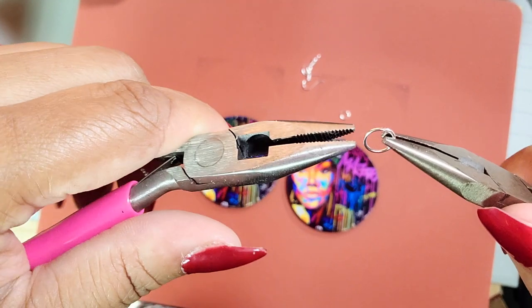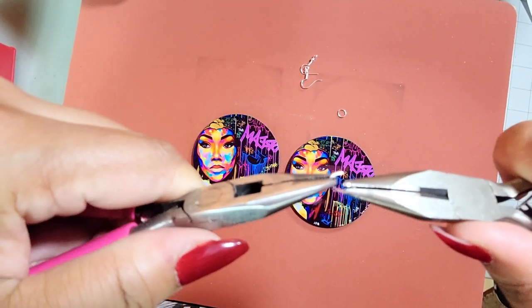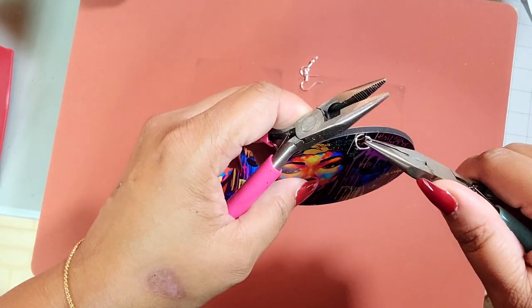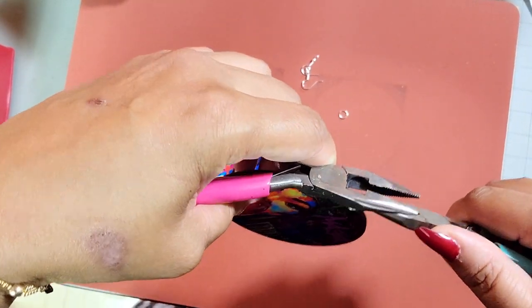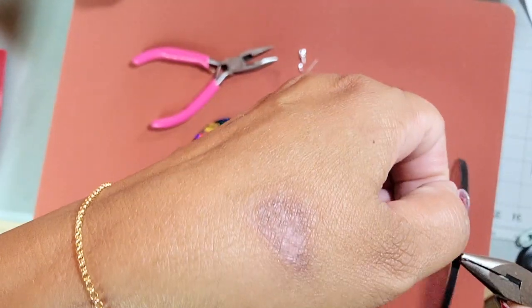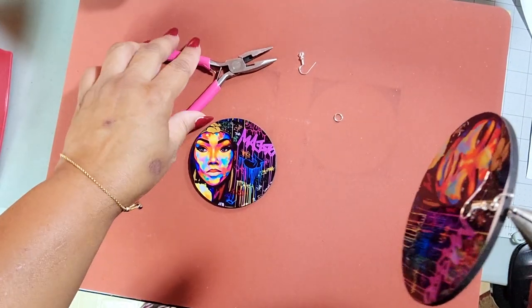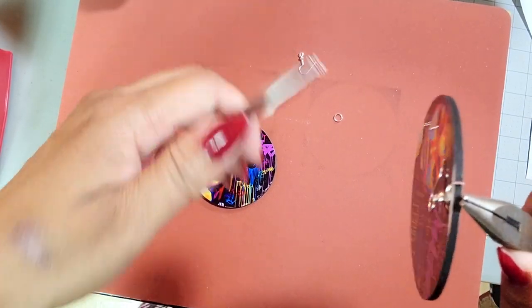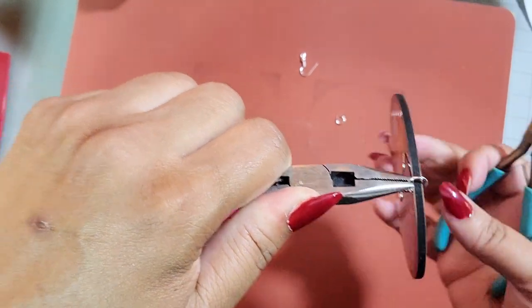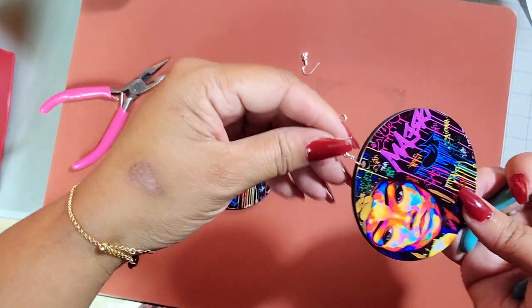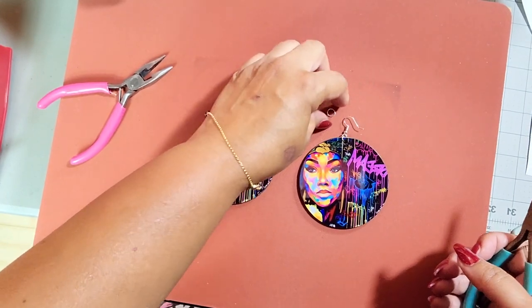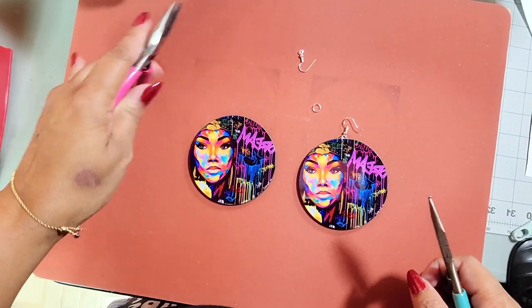So take the jump ring with one of the pliers and the other pliers. And what you want to do is while you're twisting to the front with one hand, you're going to be twisting to the back with the other hand. You never want to take the jump ring and just pull them apart left to right. Alright. So we put the fish hook on and then we just close it back up and always do it with the twisting motion, never a pulling or pushing. That's how you keep it in a nice circle.